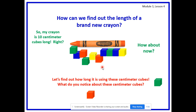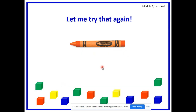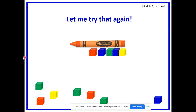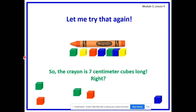We can't have any spaces. Let's try it again. Count with me — one centimeter cube, two centimeter cubes, three centimeter cubes, four centimeter cubes, five centimeter cubes, six centimeter cubes, seven centimeter cubes. So my crayon is seven centimeter cubes long. Am I right? No. My endpoints are aligned — look at the back, look at the front — they're not on top of one another anymore. What is wrong with my measuring?